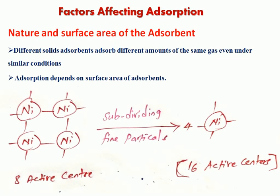First: nature and surface area of the adsorbent. Adsorption is a surface phenomenon, so adsorption depends on the surface area. Different solids absorb different amounts of the same gas even under similar conditions. Adsorption depends on the surface area of the adsorbent. For a large surface area, there is greater adsorption. As the porosity of the adsorbent increases, adsorption also increases.